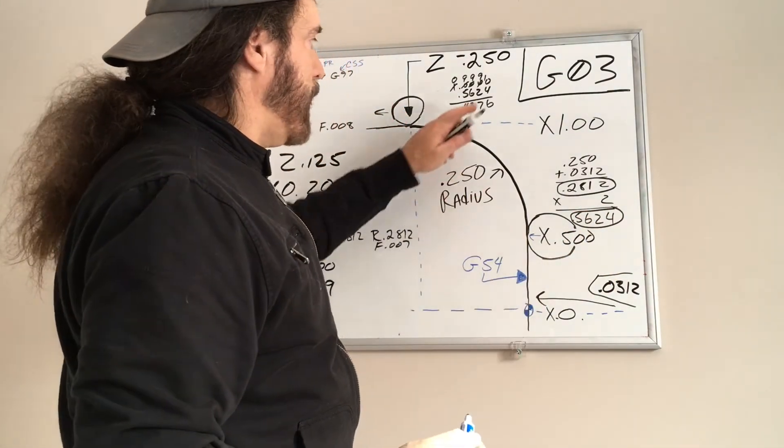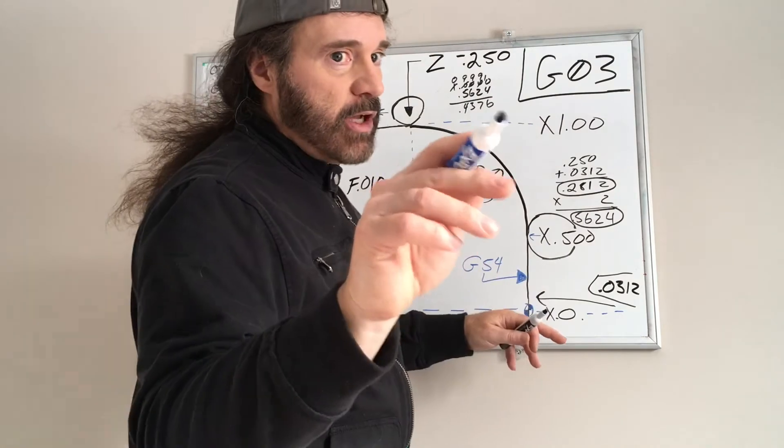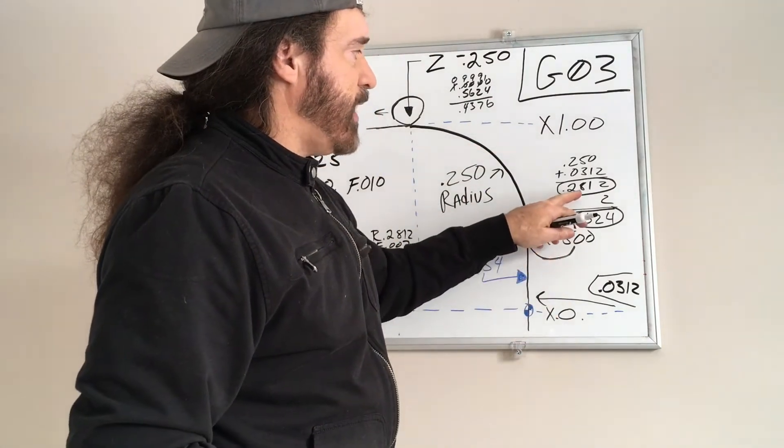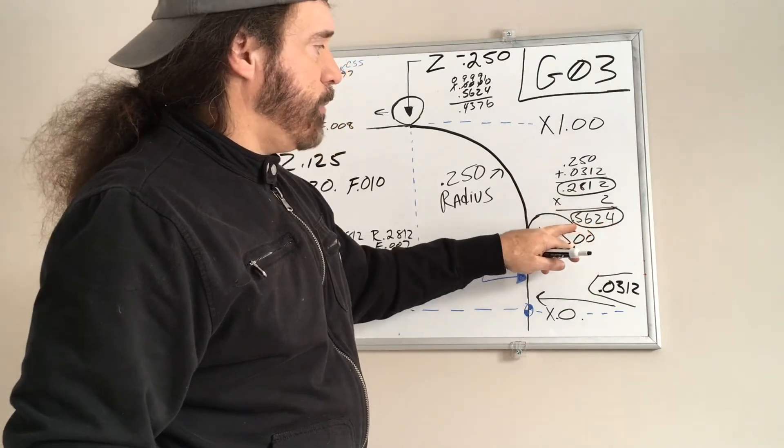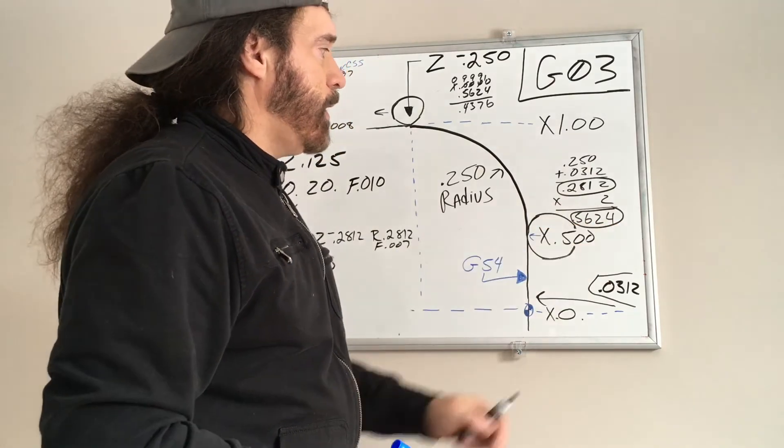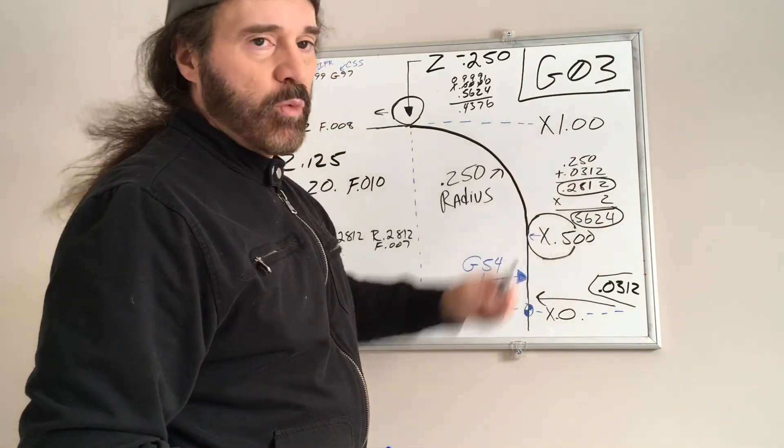So that now becomes 281.2. And remember, in your X dimension, everything gets doubled. So you just take your 281.2, multiply that by 2, and you come up with 0.5624.